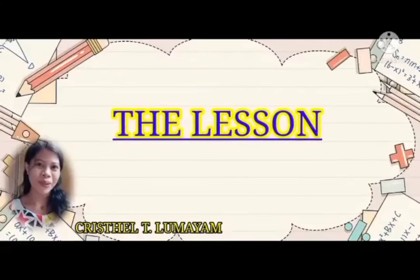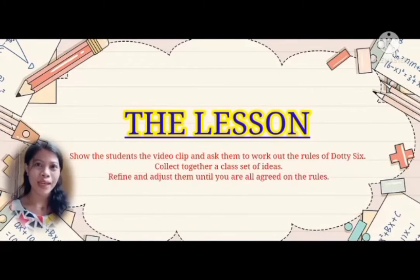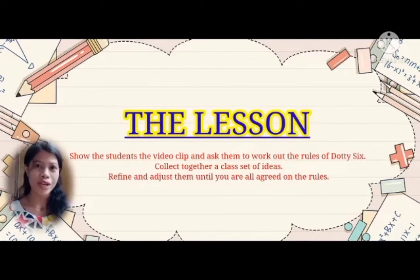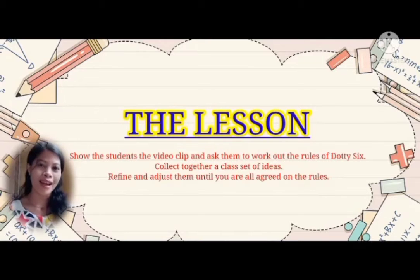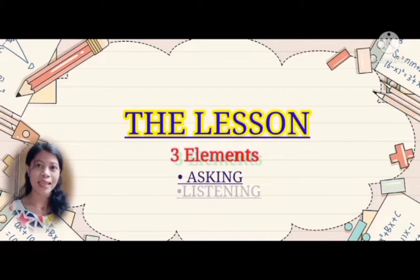For the lesson, show students the video clip and ask them to work out the rules of Dati6. Collect together a class set of ideas, refine and adjust them until you are all agreed on the rules. Let them try out the game themselves and consider whether any of the ideas below are useful to try out. They are based on three elements: asking, listening, and responding.